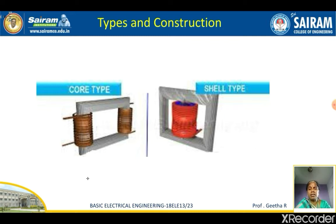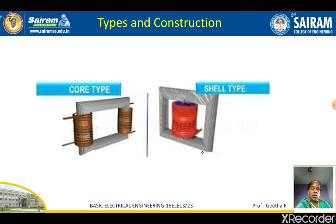The two types of transformer are the core type and the shell type. From the diagram, in the core type the winding surrounds the core — the winding is placed on the two limbs. In the shell type, the winding is inside the core — the transformer winding is wound on the middle limb, so the core surrounds the winding.